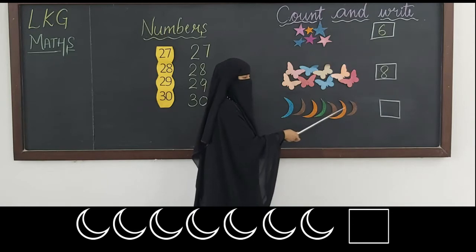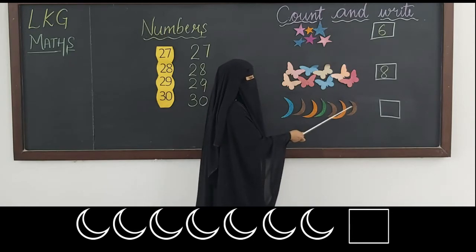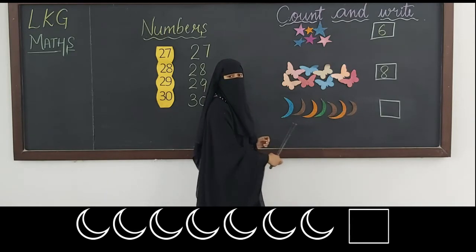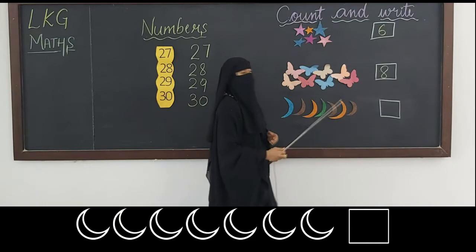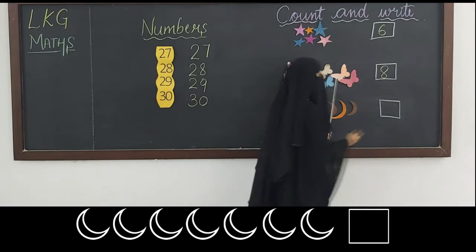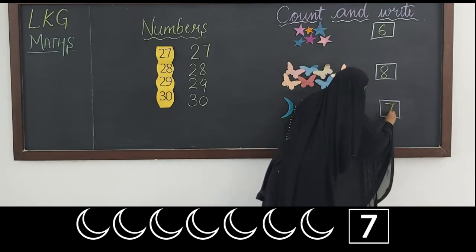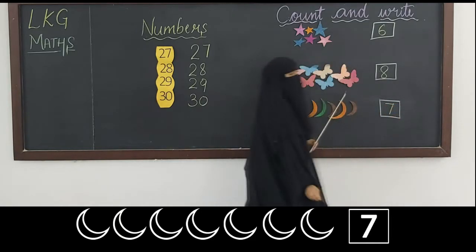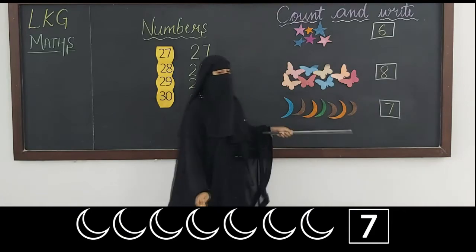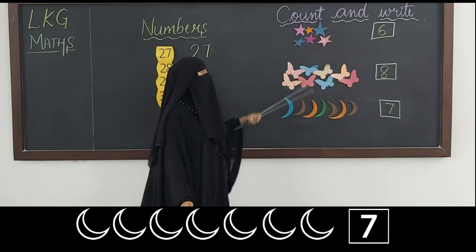Now let us count how many moons there are. 1, 2, 3, 4, 5, 6, 7. How many moons do we have? We have 7 moons. So you have to write number 7 in the box.